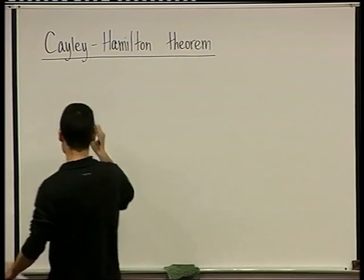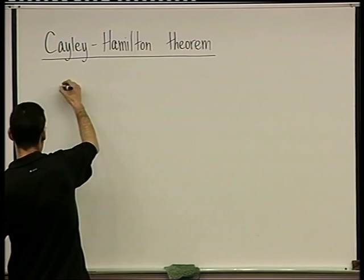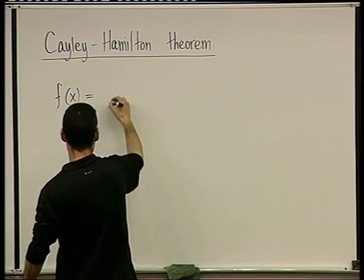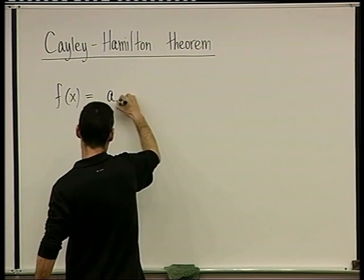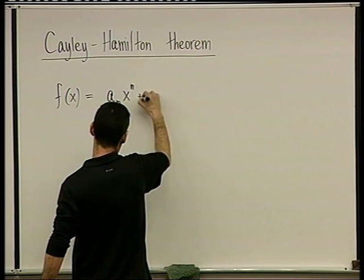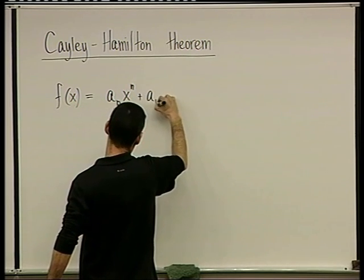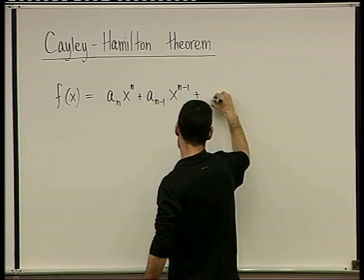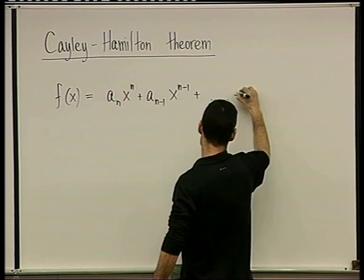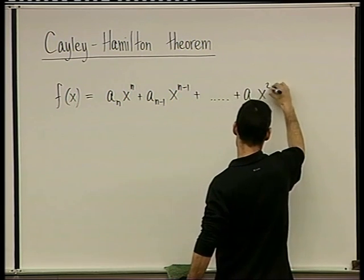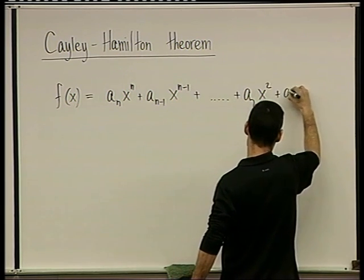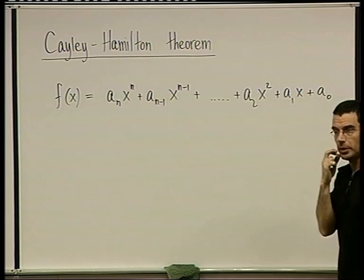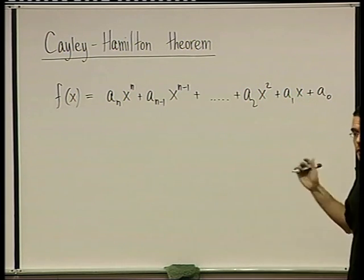Suppose we have a polynomial, let's call it f of x. So f of x is a polynomial: a_n x^n plus a_{n-1} x^{n-1} plus dot dot dot plus a_2 x squared plus a_1 x plus a_0. This is a polynomial of degree n.